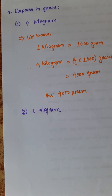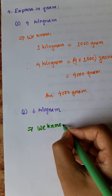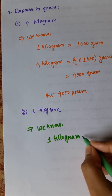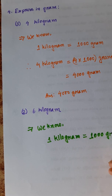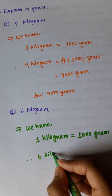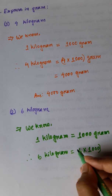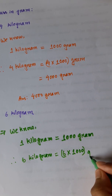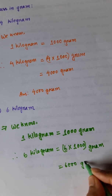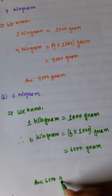Number 2: 6 kilograms. Same as number 1. We know 1 kilogram is equal to 1000 grams. So 6 kilograms is equal to 6 into 1000 grams, which equals 6,000 grams. Answer: 6,000 grams.